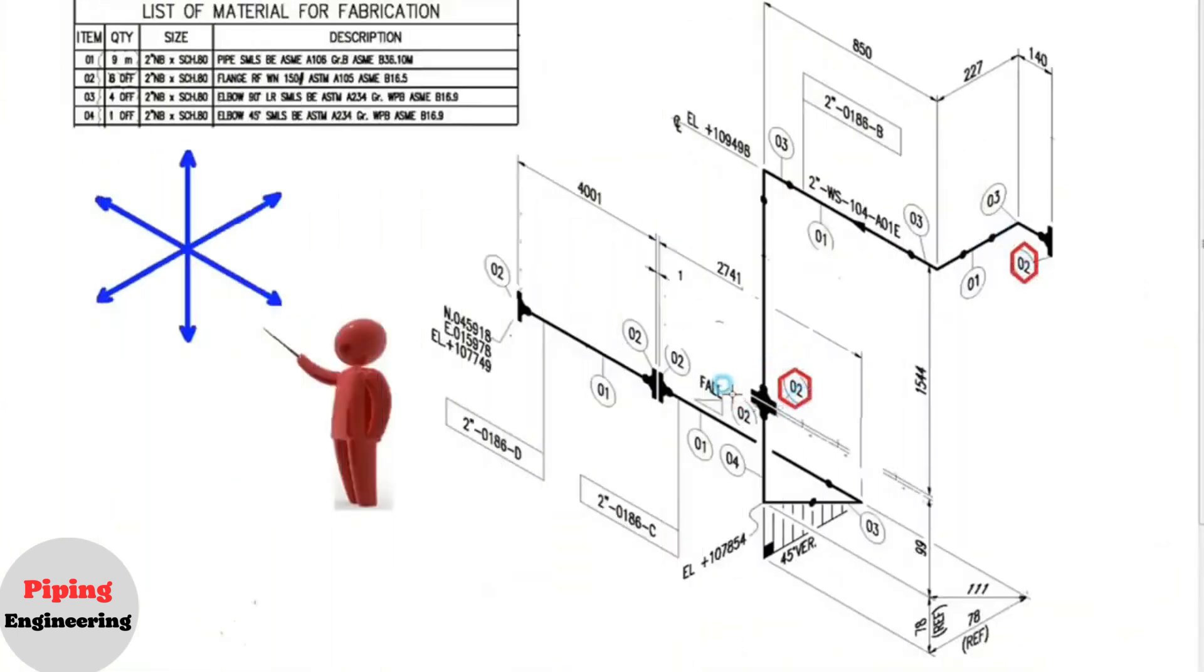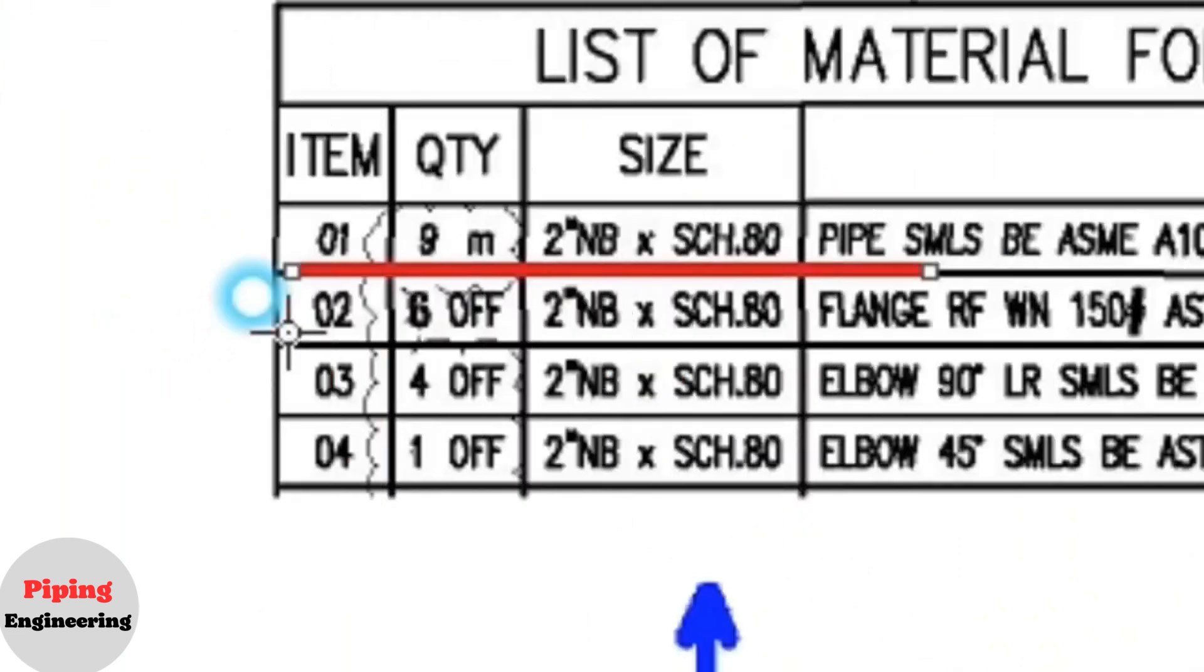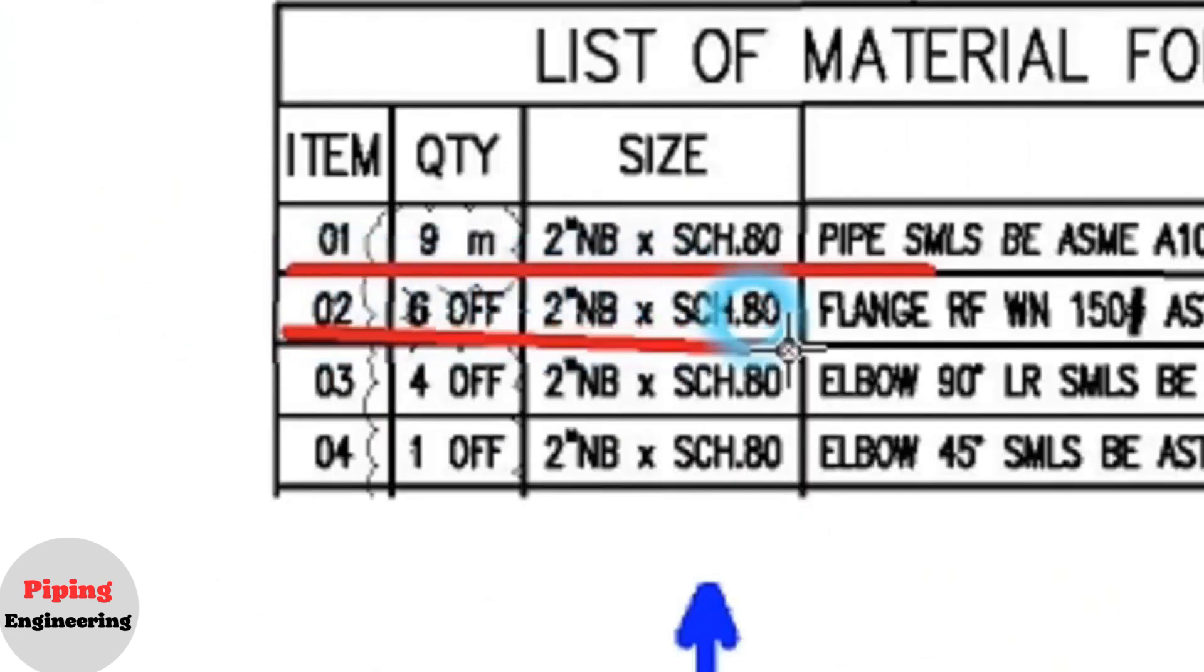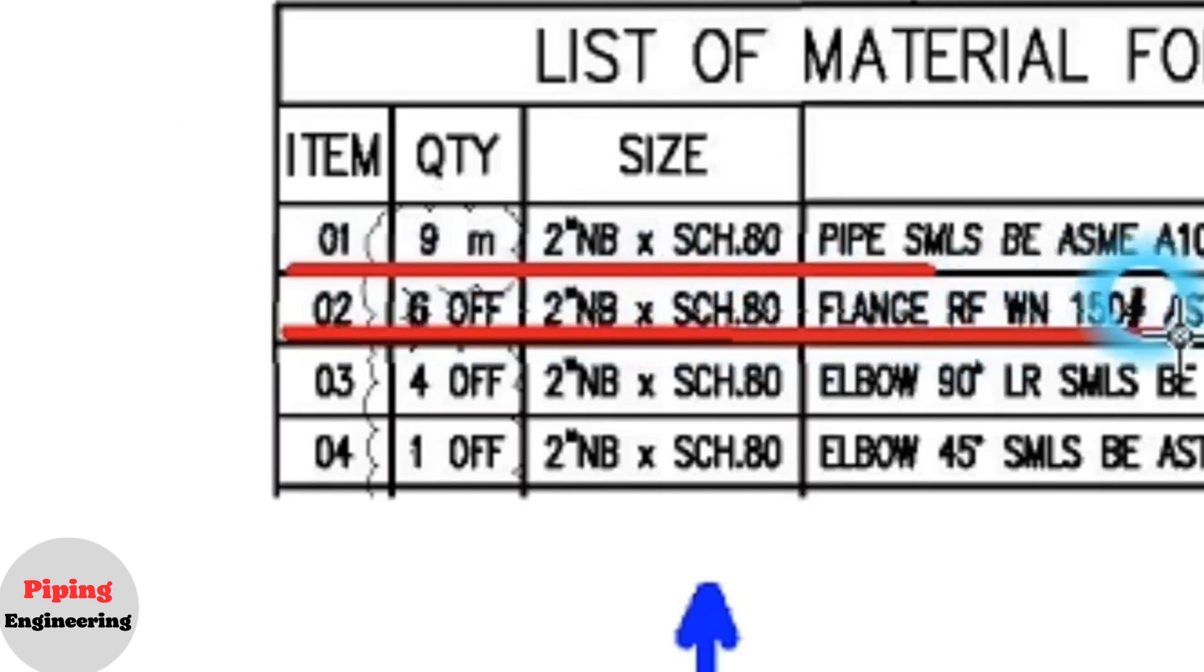These are details number 2. Let's look at the material list. Number 2: 6 pieces, 2 inch, schedule 80 flange, raised face, weld neck, class 150.